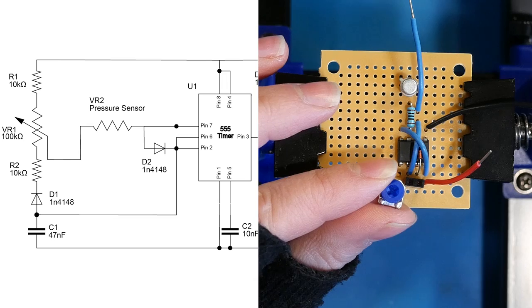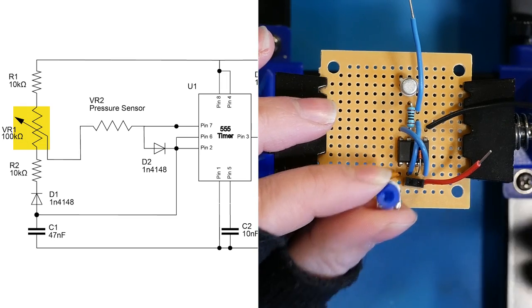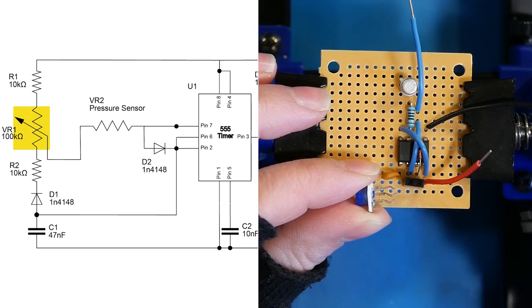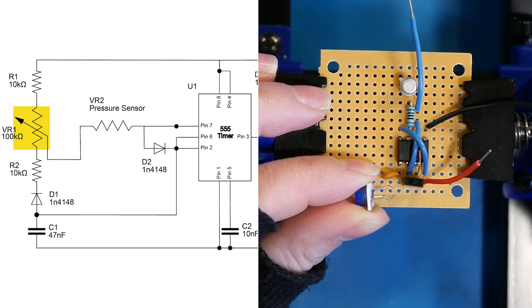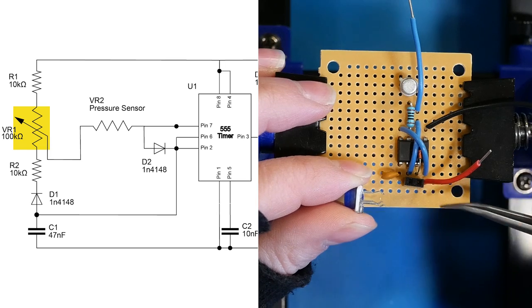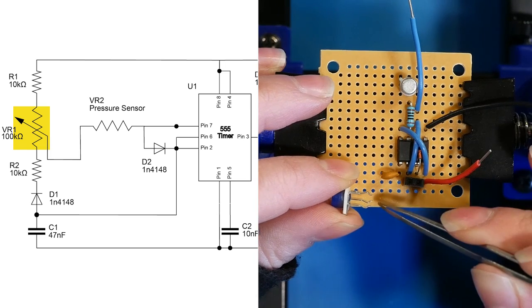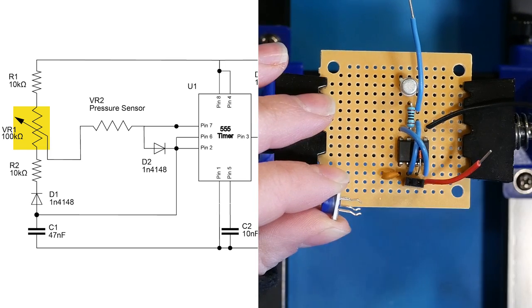Next we're going to add our 100 kilo ohm potentiometer. We're going to line this up so that the wiper pin will go to the female header pin here and then one of these is going to go up to a 10k resistor and another one will go down to a 10k resistor.